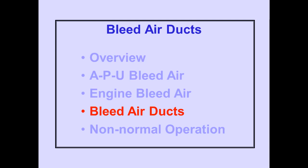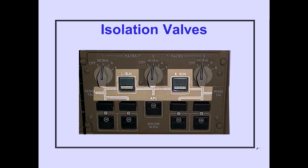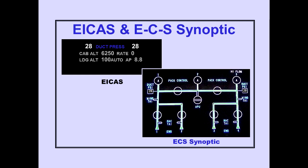Now let's discuss the bleed air ducts. The ducting connects air sources to the airplane systems. Two isolation valves, left and right, are located in the ducts. Left and right duct pressure is displayed on ICAS and the ECS synoptic.